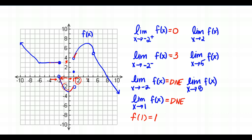Let's take a look at the limit as X approaches 2. As I approach from the right side of 2, it looks like I get close to 6, and from the left side of 2 it also looks like I get close to 6. It is a filled-in circle, a defined point, so from both sides of 2 I'm getting closer to 6, so this limit is 6.